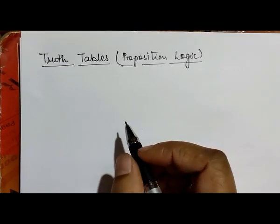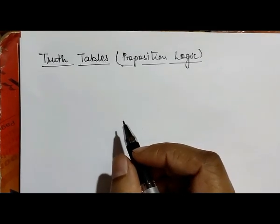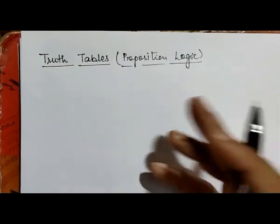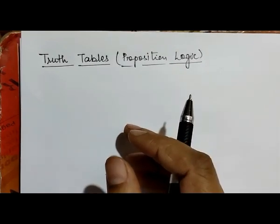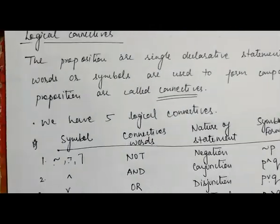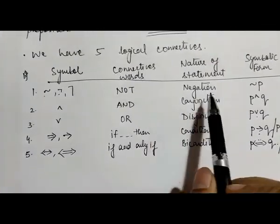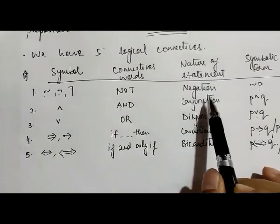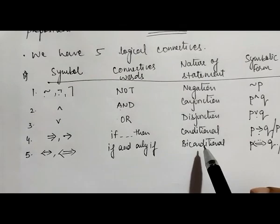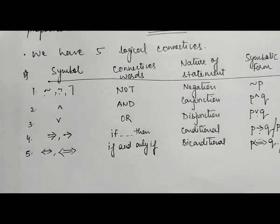Hello friends, in this video we will discuss how we prepare a truth table for all the five logical connectives. As we discussed in my previous video, the five logical connectives are: negation (NOT), conjunction (AND), disjunction (OR), conditional (IF-THEN), and biconditional (IF AND ONLY IF). We will prepare the truth table for all these five logical connectives one by one.